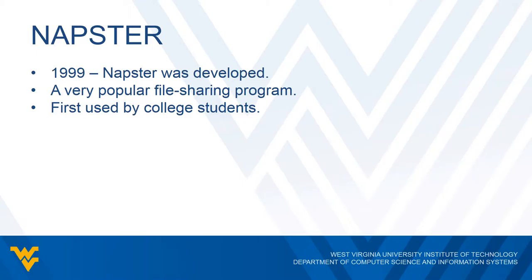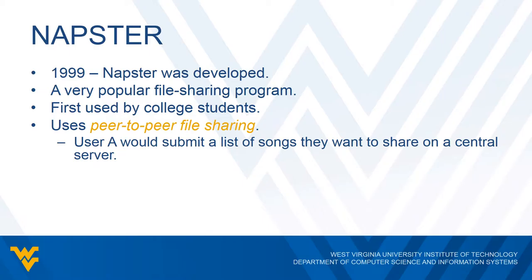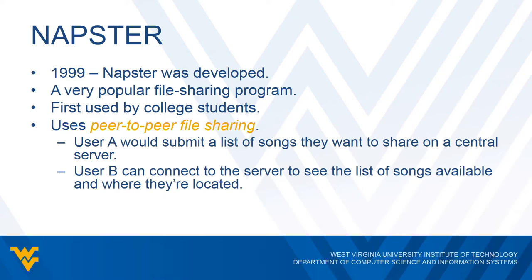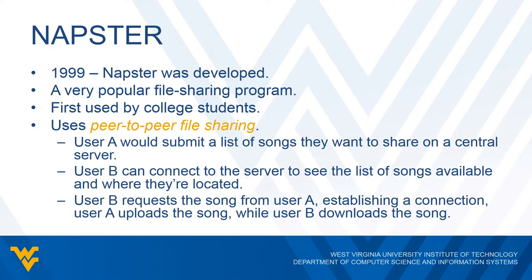Napster was a wonderful example of how technical details about computer systems can have significant social effects. The software set up what's called peer-to-peer file-sharing. User A would submit a list of songs they want to share on a central server — the server would just contain the list of songs. User B could log on to the server to see what songs are available and where they're located, including songs listed by user A and all other users. If user B picks a song from user A's list, it would establish a direct connection between users A and B. User A would upload the song while user B would download it — essentially copying the song from user A to user B, who then has a copy to play on their computer.